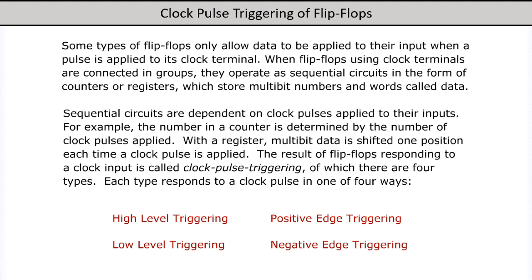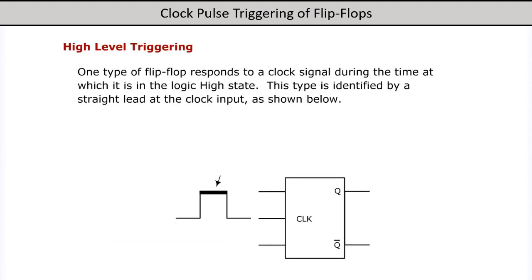High-level triggering: one type of flip-flop responds to a clock signal during the time at which it is in the logic high state. This type is identified by a straight lead at the clock input, as shown below.